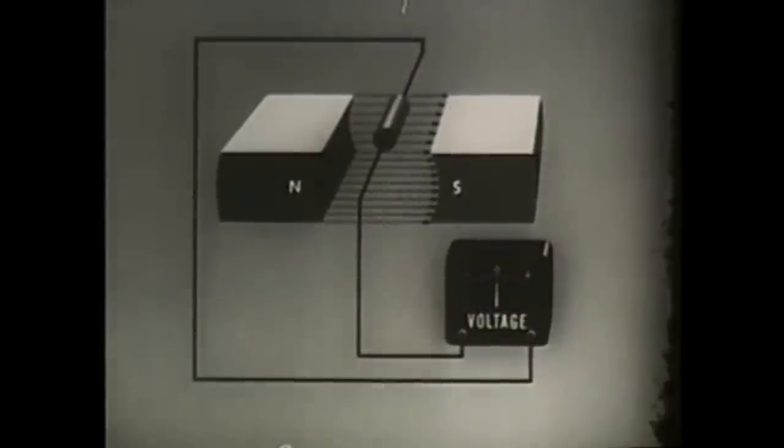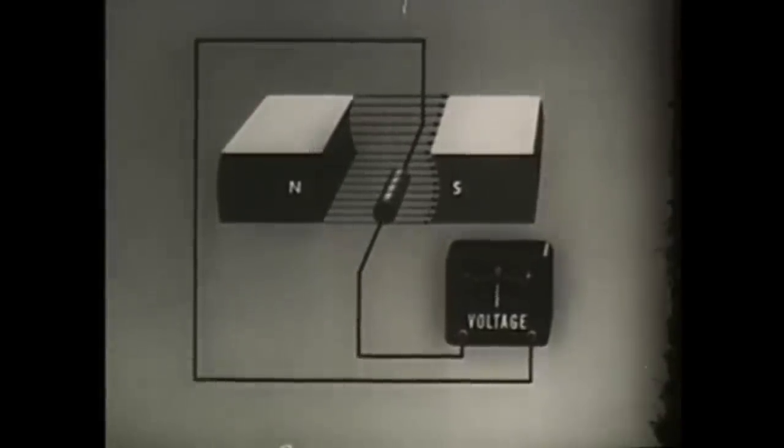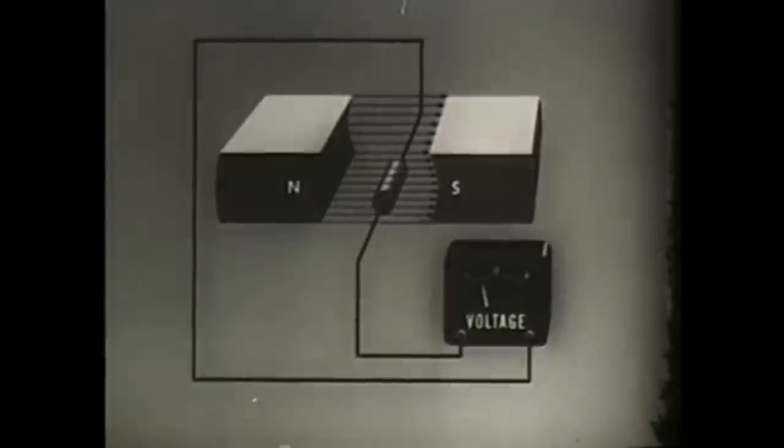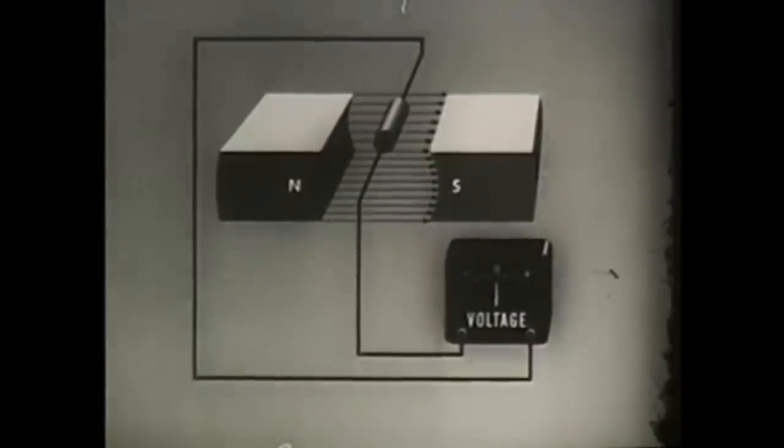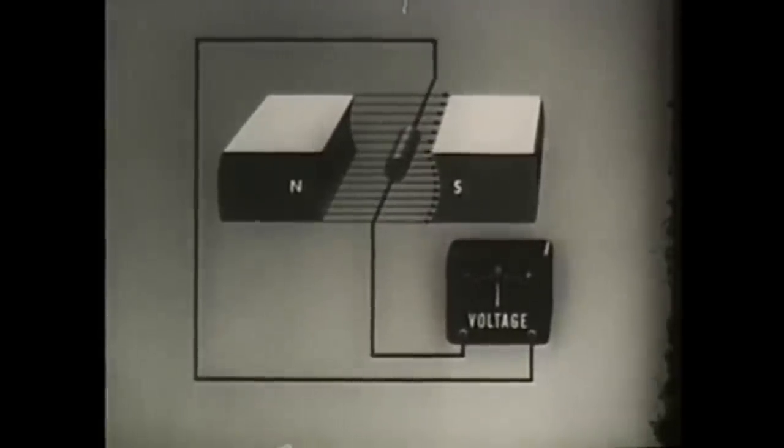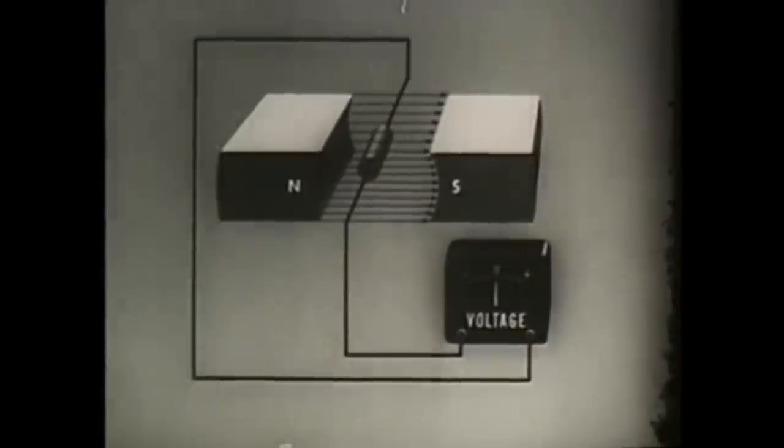The magnetic field is composed of lines of force. As the conductor cuts these lines, an electromotive force, or EMF, is generated in the conductor. Moving the conductor down through the field makes the needle of a voltmeter deflect one way, which means the EMF has one direction. Moving the conductor up through the field produces the opposite deflection of the needle. The EMF has now changed direction. Moving the conductor back and forth with the field does not make the needle of a voltmeter deflect. There is no EMF because the conductor is not cutting the field.